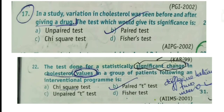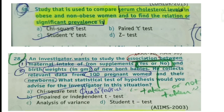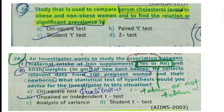Question 58: 'A study used to compare serum cholesterol levels in obese and non-obese individuals — the test for significant prevalence is?' Here we are comparing two types — obese and non-obese — on one occasion (serum cholesterol levels), so it is an unpaired t-test, which is a type of Student's t-test. Since unpaired t-test is not listed as an option but Student's t-test is, the answer is Student's t-test.